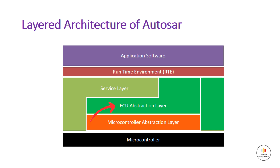The ECU abstraction layer provides the following functionalities: first, ECU initialization and configuration; second, access to ECU peripherals such as sensors, actuators, and communication interfaces; third, diagnostic and fault handling services; and last, low-level access to the hardware. Moving on to the next sublayer, that is the service layer.